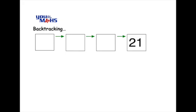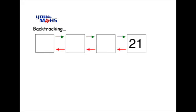To solve this problem using backtracking, what we're going to do is have a look at things in reverse, hence the title backtracking. So the red arrows are going to represent the opposite operations to what we applied to the letter n.